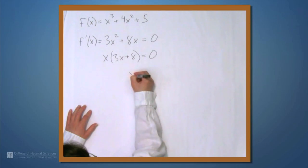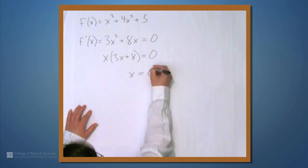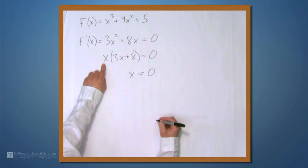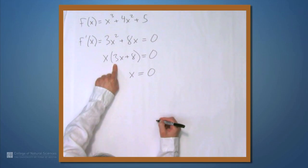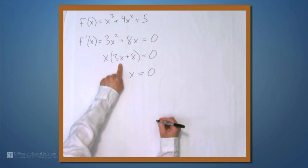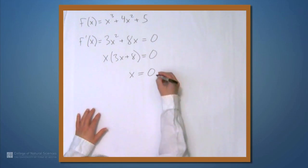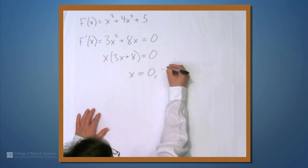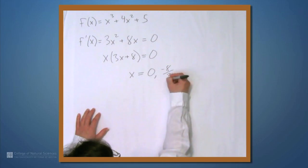So, this means that x equals 0 from this one, and from inside here, x is going to have to be negative 8 thirds for this to be 0. Because 3 times negative 8 thirds is negative 8, and then plus 8 is 0. So, you get 0 and negative 8 thirds.